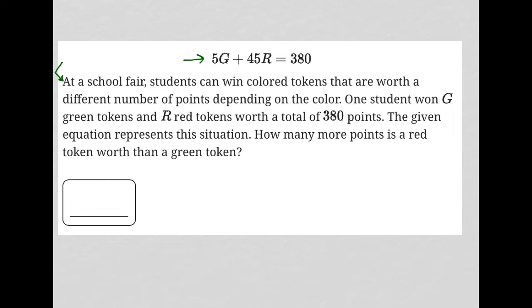One student won G green tokens. We don't know how many that is, but if G were 10, for instance, the fact that we see 5G here would mean that this student won 50 green tokens. And R red tokens - we don't know what R is, but if R were 10, let's say, that would mean the student won 450 red tokens, worth a total of 380 points. The given equation represents this situation.